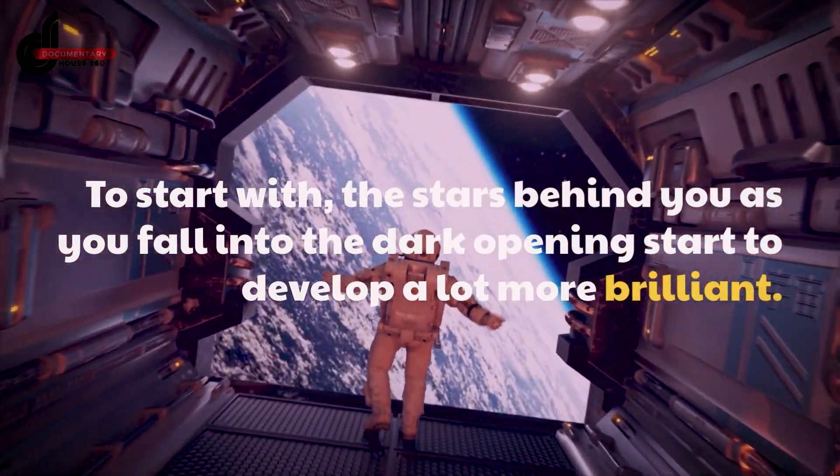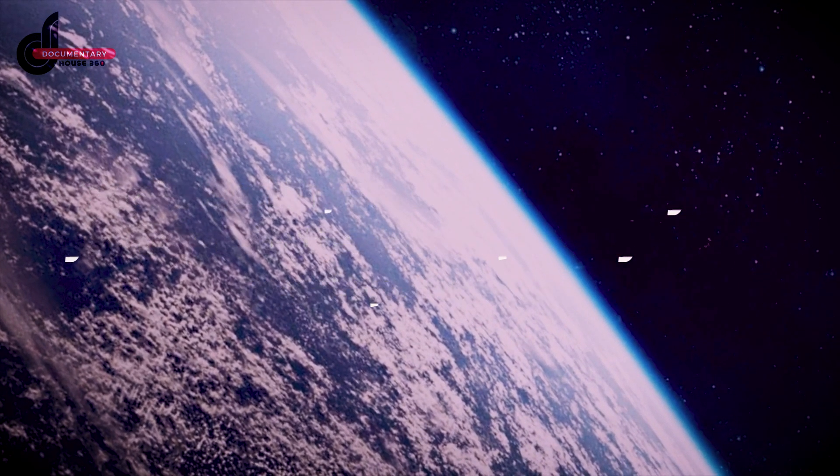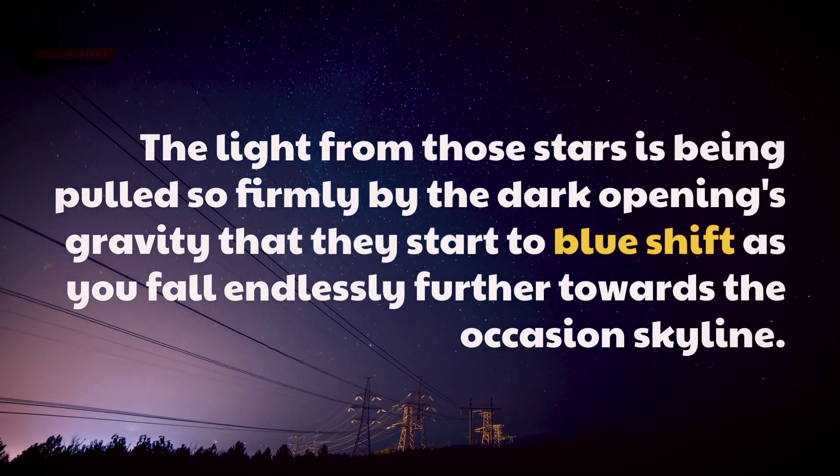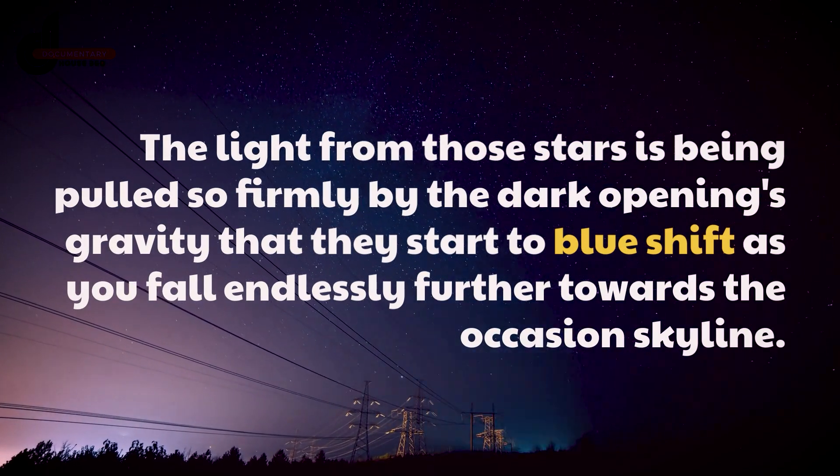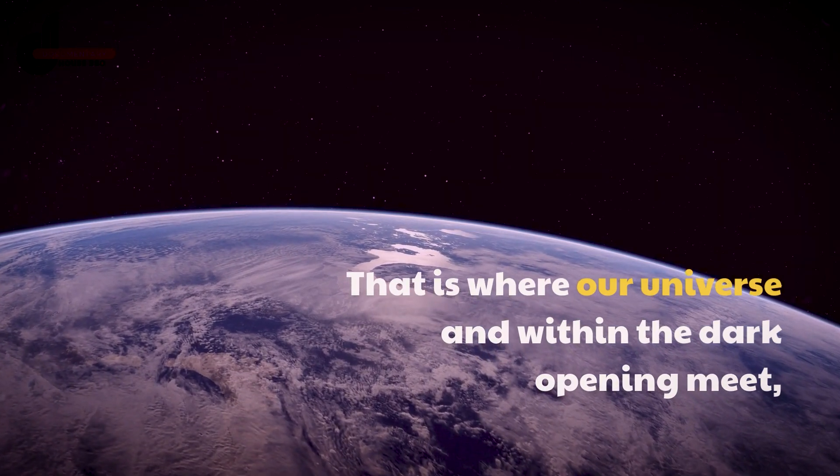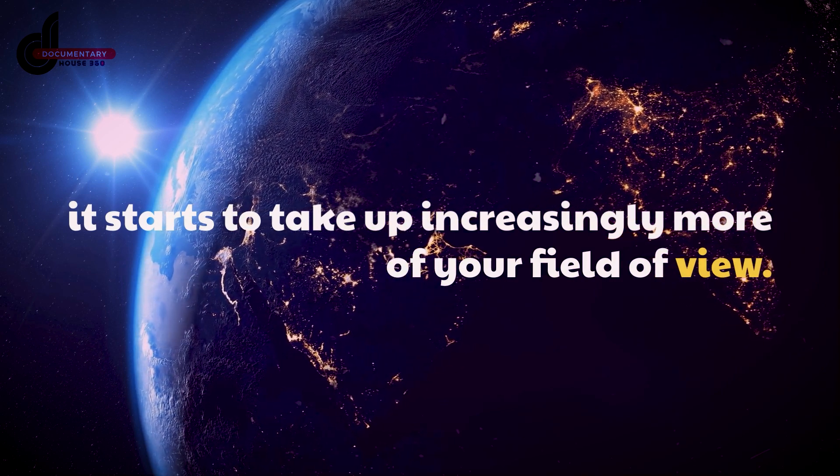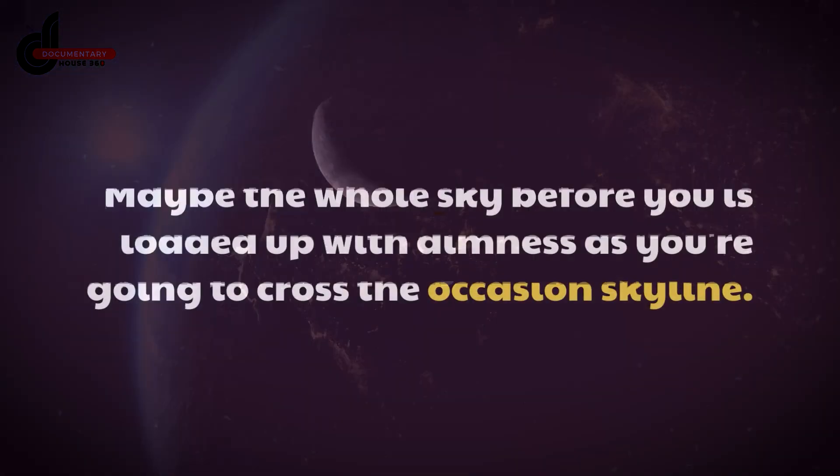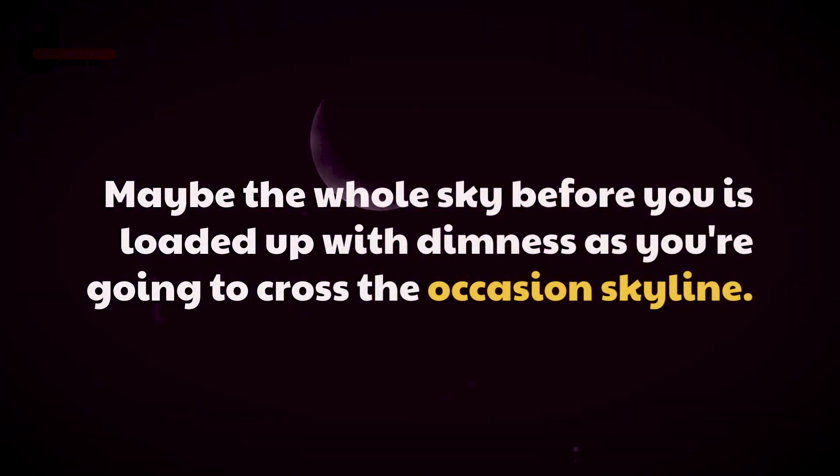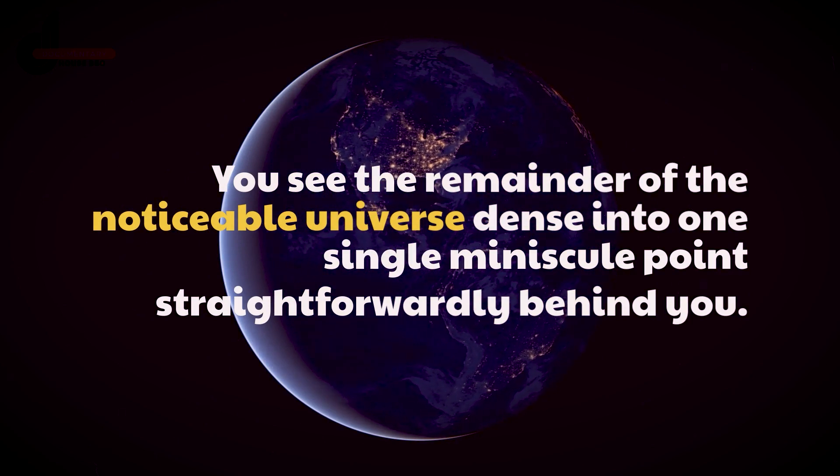To start with, the stars behind you as you fall into the black hole start to grow a lot brighter. The light from those stars is being pulled so firmly by the black hole's gravity that they begin to blue shift. As you fall farther and farther towards the event horizon, that's where our universe and the inside of the black hole meet, it begins to take up increasingly more of your field of view. Maybe the entire sky before you is filled with darkness as you're about to cross the event horizon.